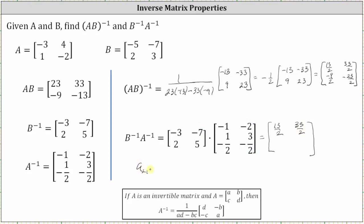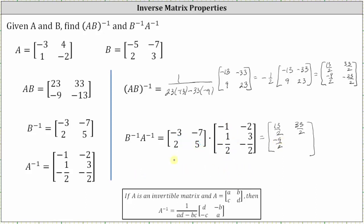To find the element in row two, column one, we multiply row two in the first matrix and column one in the second matrix. Two times negative one is negative two, plus five times negative one half is negative five halves. Negative two is equal to negative four halves, and negative four halves plus negative five halves is negative nine halves. And finally for the element in row two, column two, we multiply row two in the first matrix and column two in the second matrix. We have two times negative two, which is negative four, plus five times negative three halves, which is negative 15 halves. Negative four is equal to negative eight halves, and negative eight halves plus negative 15 halves is negative 23 halves.